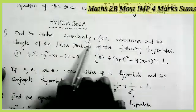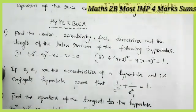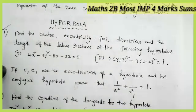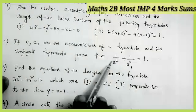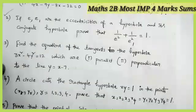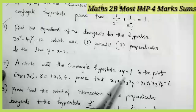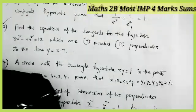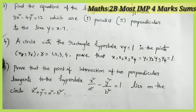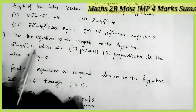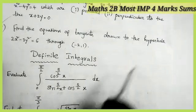Coming to the hyperbola: find the center, eccentricity, foci, directrices, and length of latus rectum of the following hyperbolas. From hyperbola, one four-mark question comes in the examination. If E and E1 are the eccentricities of a hyperbola and its conjugate hyperbola, then show that 1/E² plus 1/E1² equals 1 — most important question. Find the equations of tangents to the hyperbola which are parallel and perpendicular to the given line — most important. A circle cuts the rectangular hyperbola xy equals 1 in the points x, y — prove the given result. Prove that the point of intersection of perpendicular tangents to the hyperbola lies on the circle x² plus y² equals a² minus b². Find the equation of tangents drawn from (-2, 1) to the hyperbola.